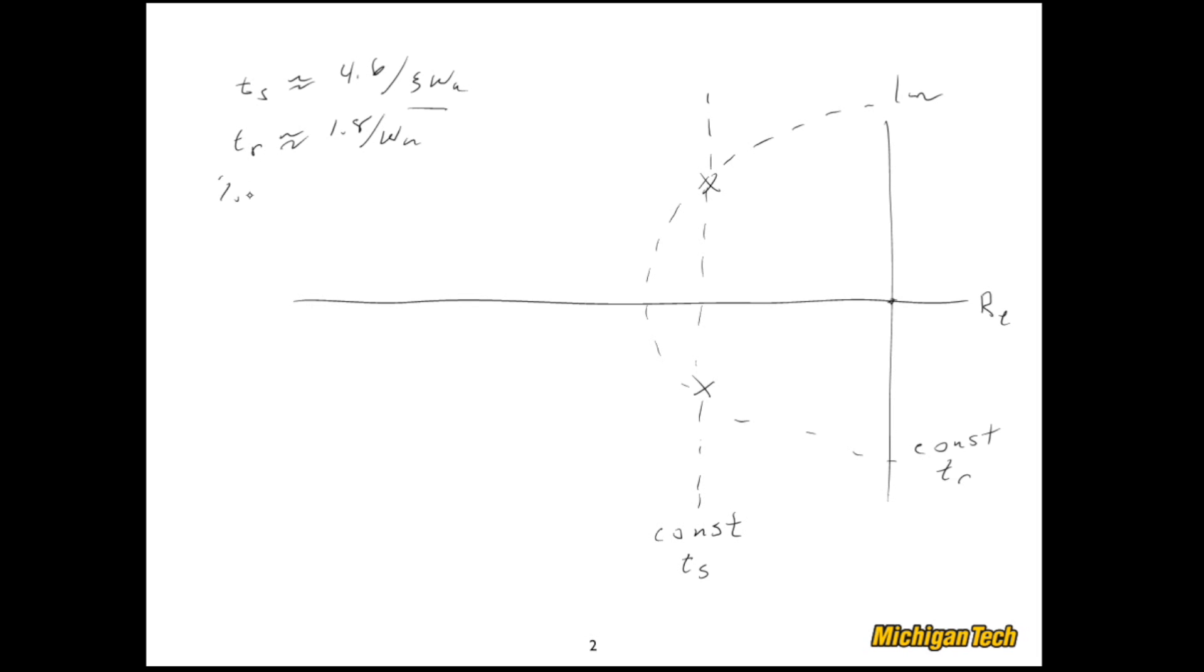Now percent overshoot was 100 e to the negative pi zeta over the square root of 1 minus zeta squared. But all we really need to take away from this is that it's a function only of zeta.